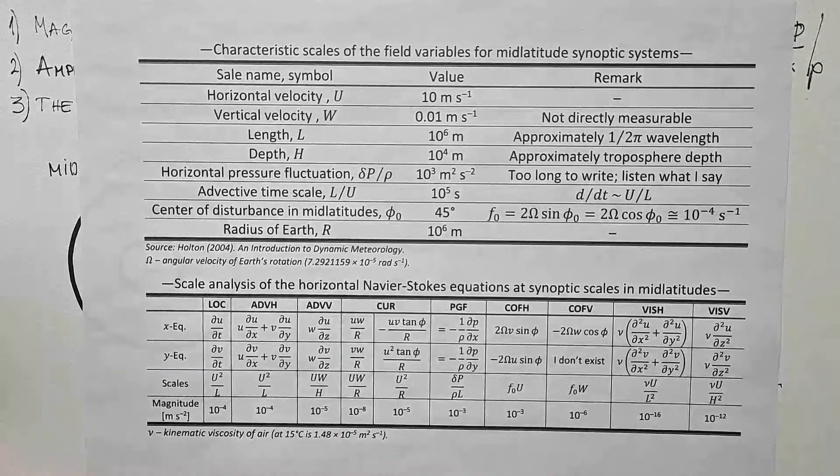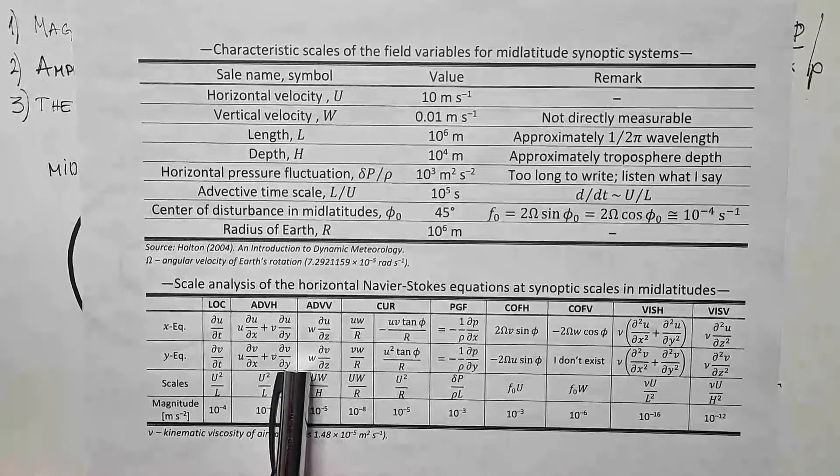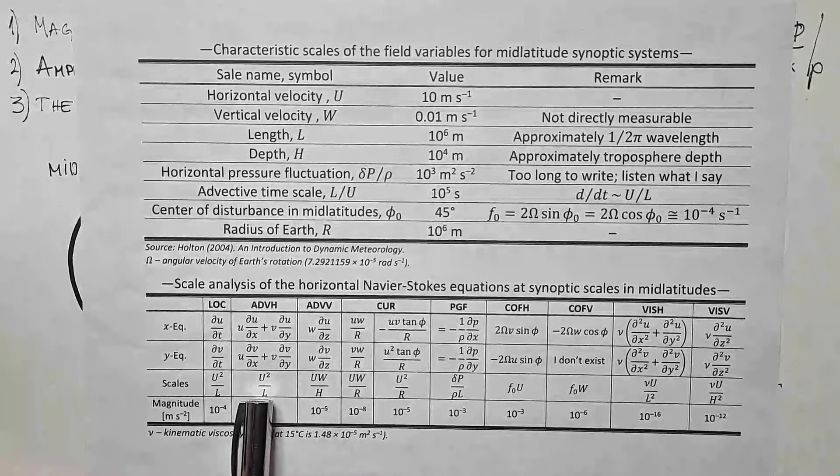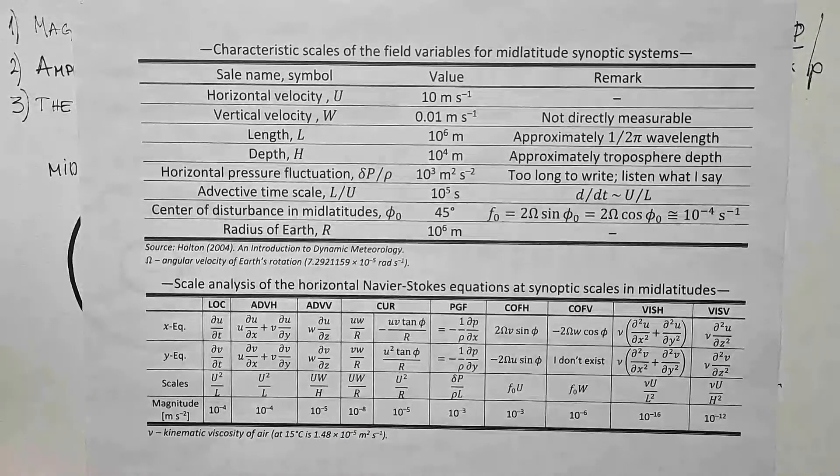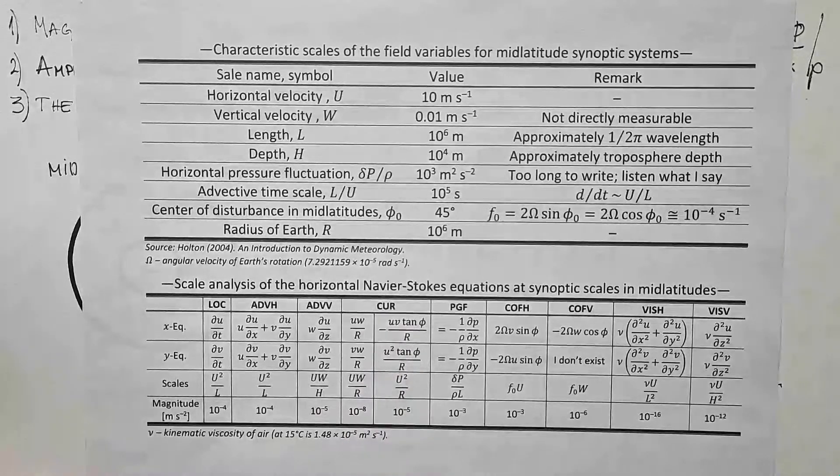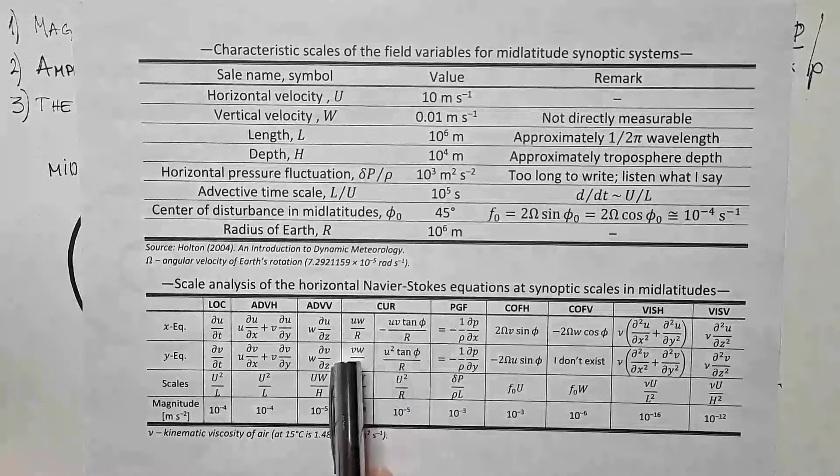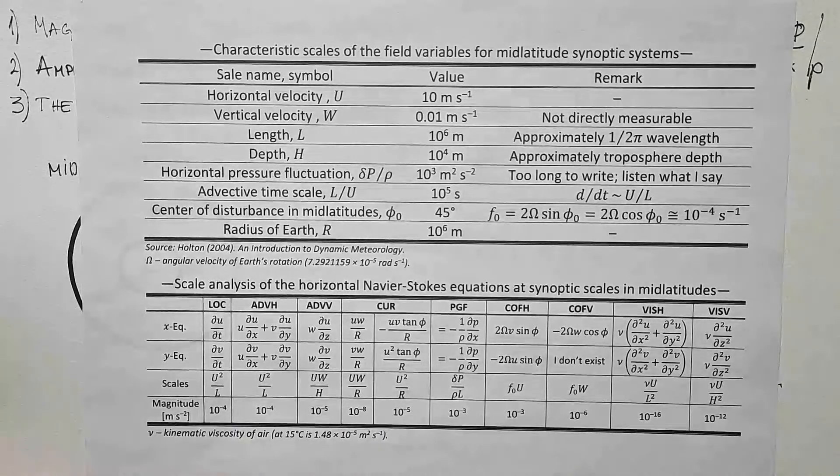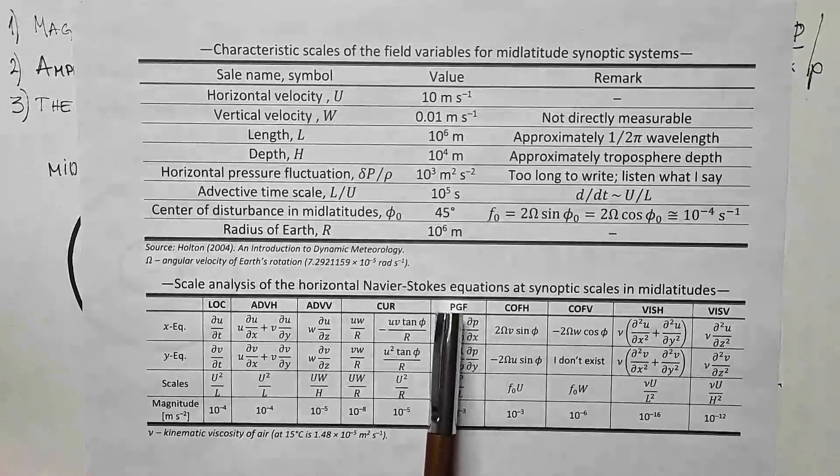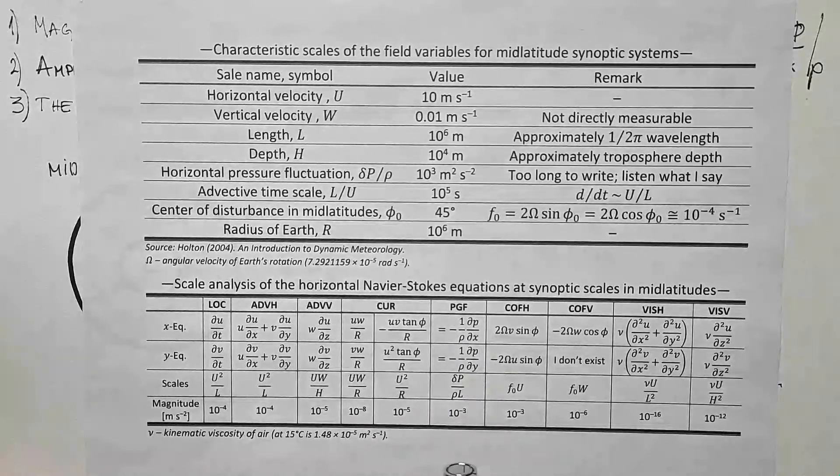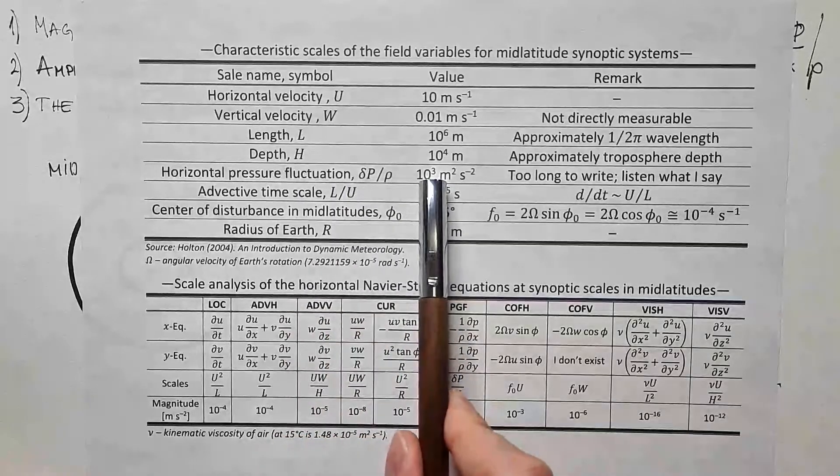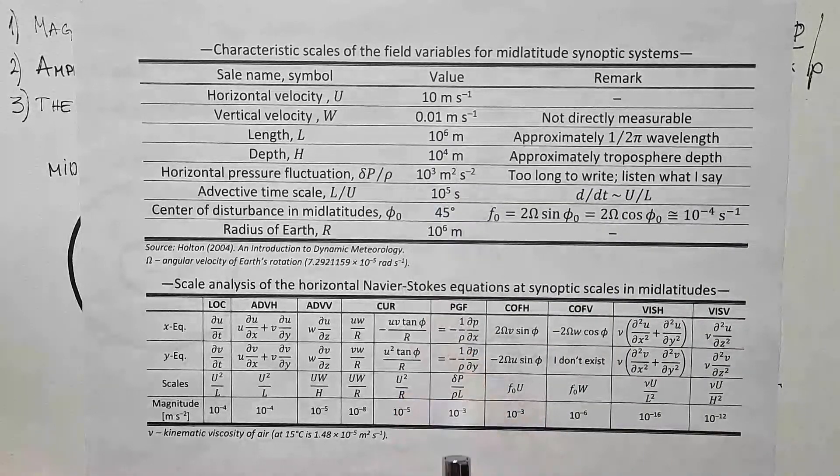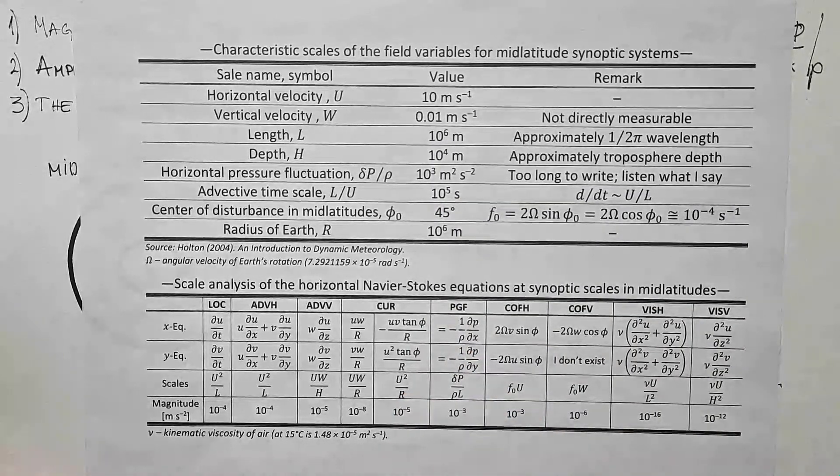Vertical advection is order of magnitude smaller, because w is smaller than horizontal velocity, and also depth of the atmosphere is smaller than the characteristic horizontal length scale. And then we have nasty curvature terms. I spent 15 minutes in one video deriving these, and we can see how they scale here. They are smaller than advection terms and local derivatives. Then we have pressure gradient force, and you can see delta p over rho scales as 10 to power 3, and L is 10 to power 6, so this scales as 10 to power minus 3 meters per second square.